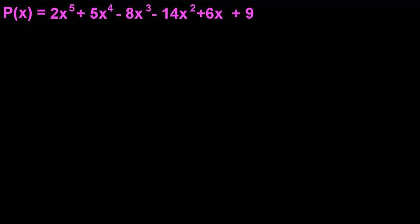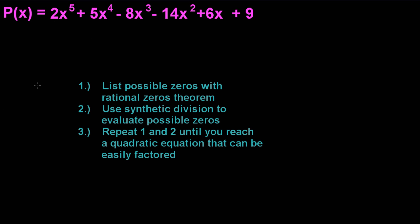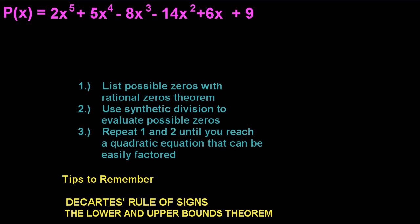We're trying to factor this polynomial into its linear combinations. The steps we're going to use are: first, list the possible zeros with the rational zero theorem; second, use synthetic division to evaluate those zeros — we're looking for a zero remainder at the end. We repeat steps one and two until we end up with a quadratic equation, at which point we can factor by inspection or use the quadratic formula. These additional steps aren't required but help in the process.